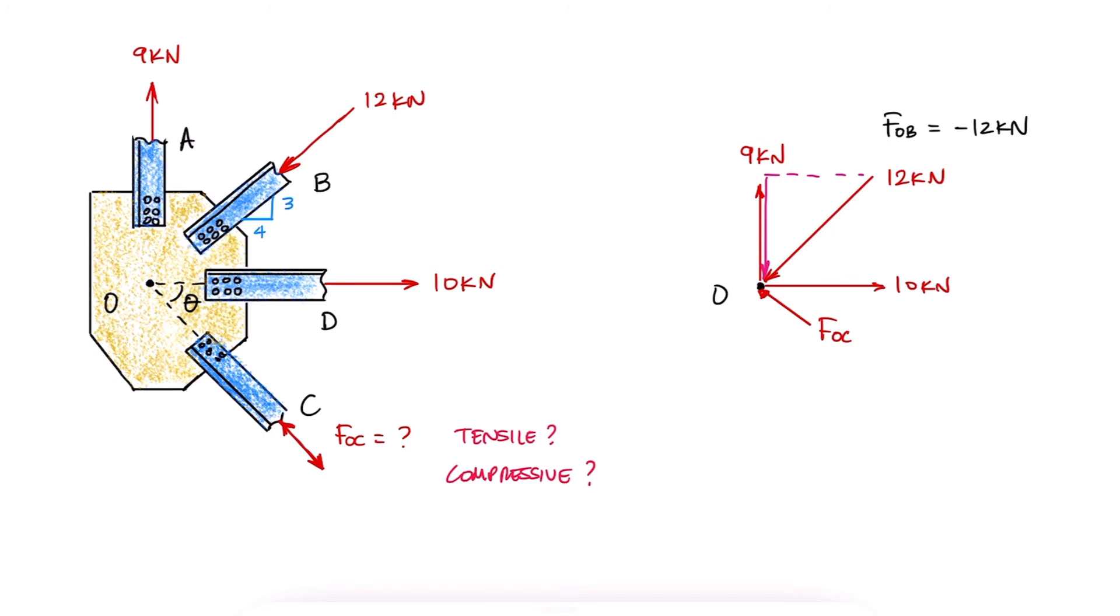Upward and left, of course, so that its y-component and 9 counteract the y-component of 12. But again, just following the general recommendation that the unknown force will cause tension in that member, we should assume that FOC is pointing down. That way the sub-indices are also consistent.